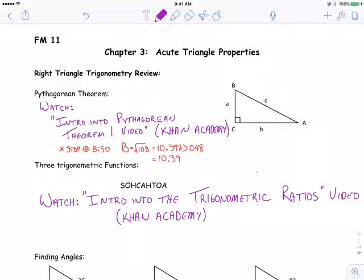You should have, at this point, watched this first video, Intro into the Pythagorean Theorem on the Khan Academy website, that's Theorem number 1. Stop at the 850 mark, you don't need to know how to do that whole factoring square root thing. And you should have watched the Intro into the Trigonometric Ratios video, which reviews Sokotoa, sine, cosine, and tangent, and what those ratios stand for.